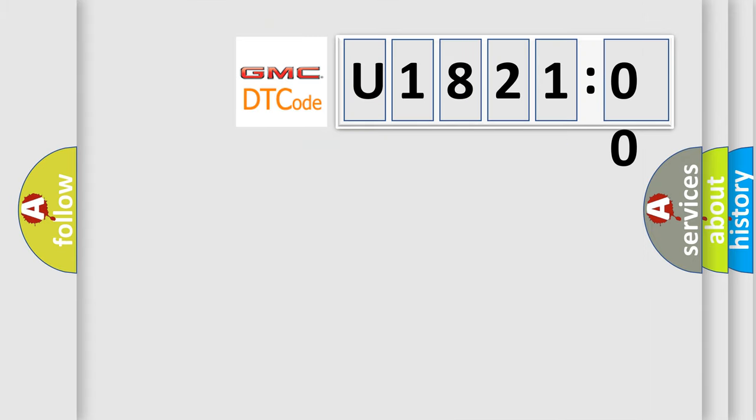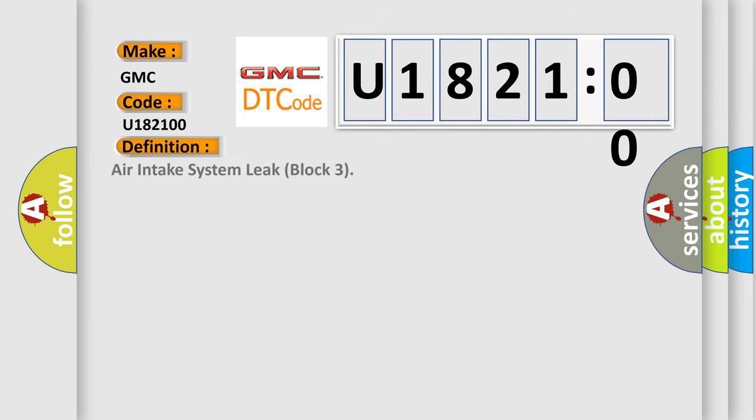So, what does the diagnostic trouble code U182100 interpret specifically for GMC car manufacturers? The basic definition is air intake system leak block 3.